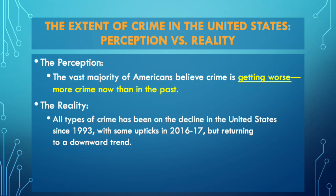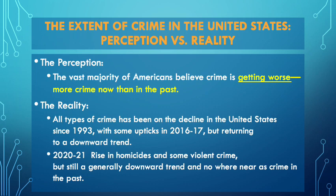There was a minor uptick in crime in 2016-17, but it returned to a downward trend shortly after. In 2020 and 2021 there were significant rises in homicides, and some rises in violent crime overall. However, the general trend is downward, and crime is nowhere near as bad as it was in the 1970s, 80s, and 90s.